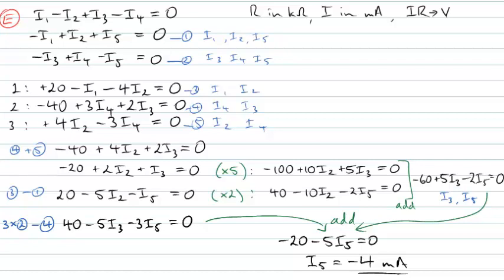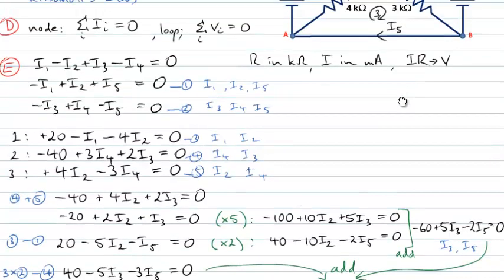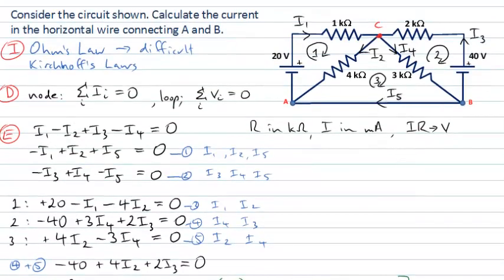The negative sign tells us we got the direction incorrect. The current between A and B is four milliamps, but the direction for I5 is actually from A to B — opposite to how I labelled it on the diagram. I won't change the direction on the diagram since my calculation was based on that assignment; I5 as labelled is −4 mA, meaning it flows in the opposite direction.